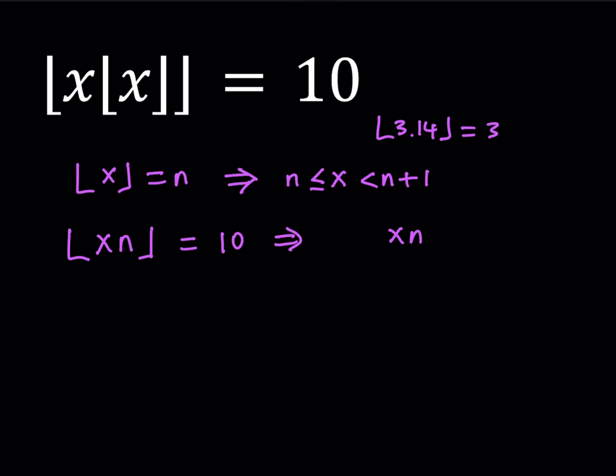We get the floor value of xn is equal to 10. And this also implies another inequality, which is xn between 10 and 11. So you always write it between two consecutive integers, where the expression can be equal to the lower value. Now we do have two inequalities, but first we have to make some assumptions.